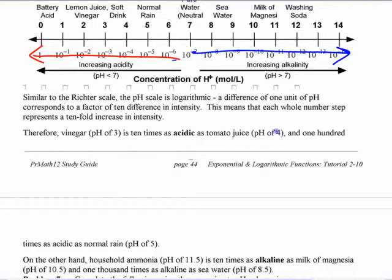So just looking at this, pH of three is ten times as acidic as tomato juice, pH of four. Vinegar is ten times as acidic as tomato juice. You would guess that, I guess, but it seems more acidic. A jump of one is ten times more. You just have to look at the direction you're going.